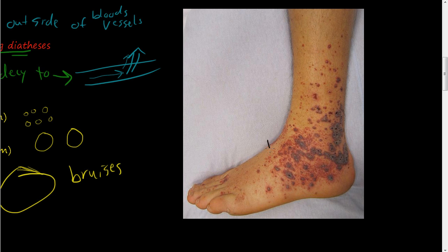So you can see these little bumps here. These would be petechiae, these little small ones here. And then these larger ones right here would be purpura.